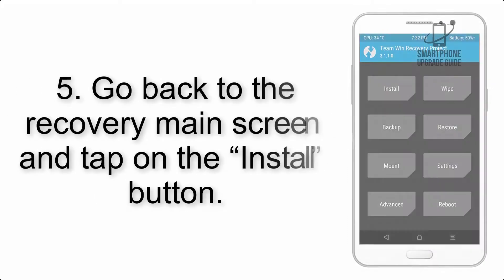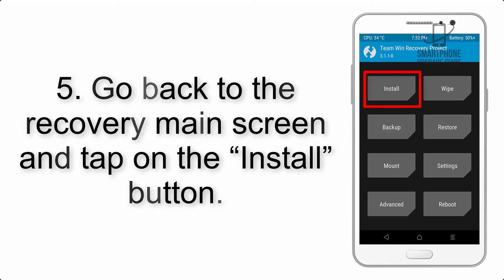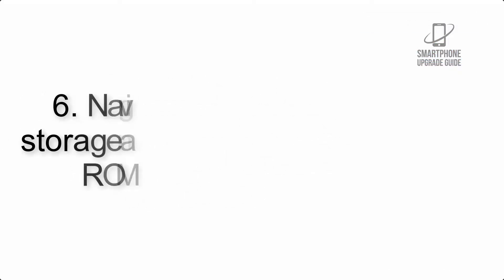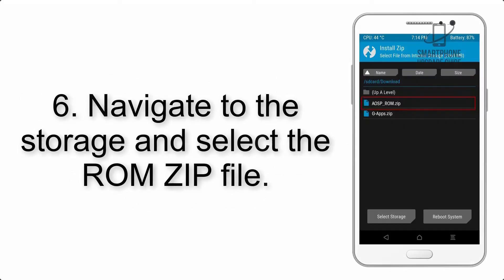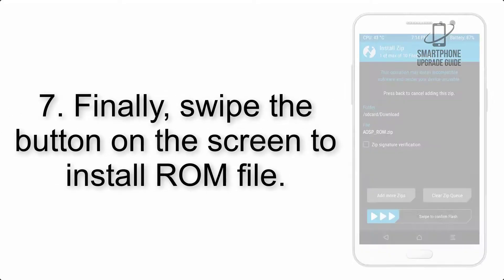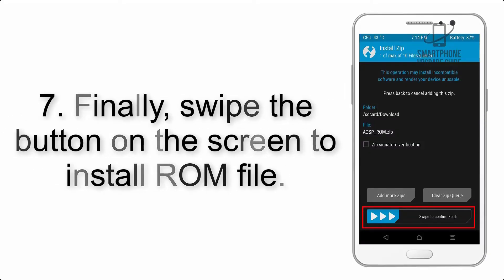Step 4: Swipe the button to wipe the device. Step 5: Go back to the recovery main screen and tap on the Install button. Step 6: Navigate to the storage and select the ROM zip file.